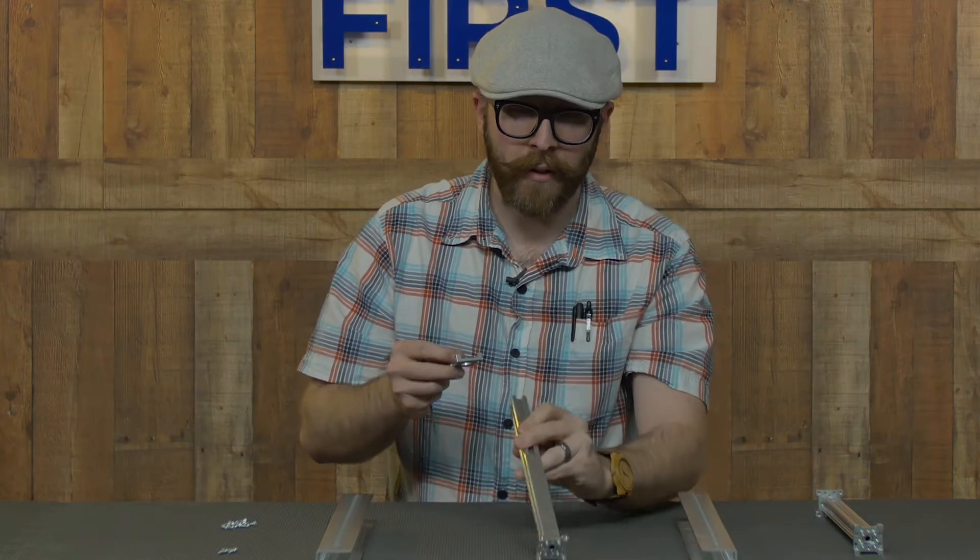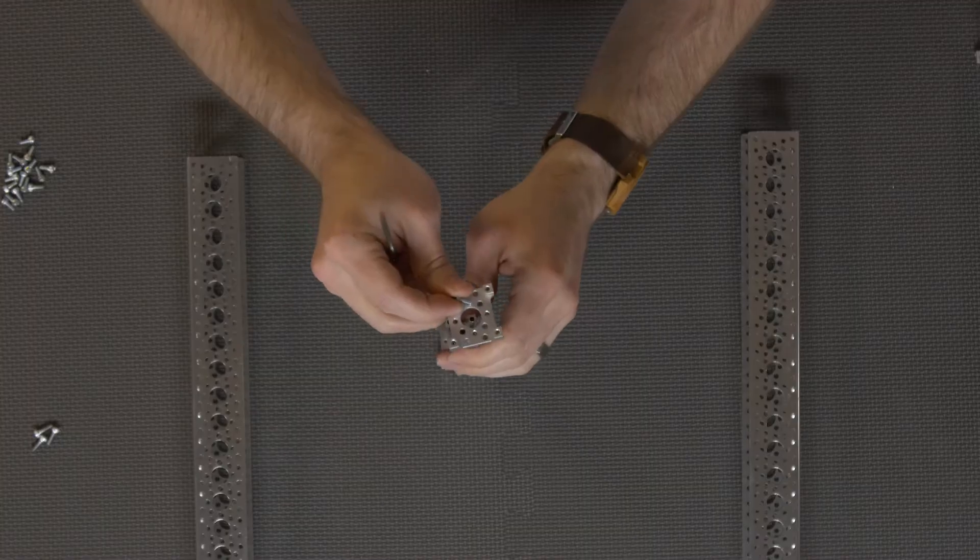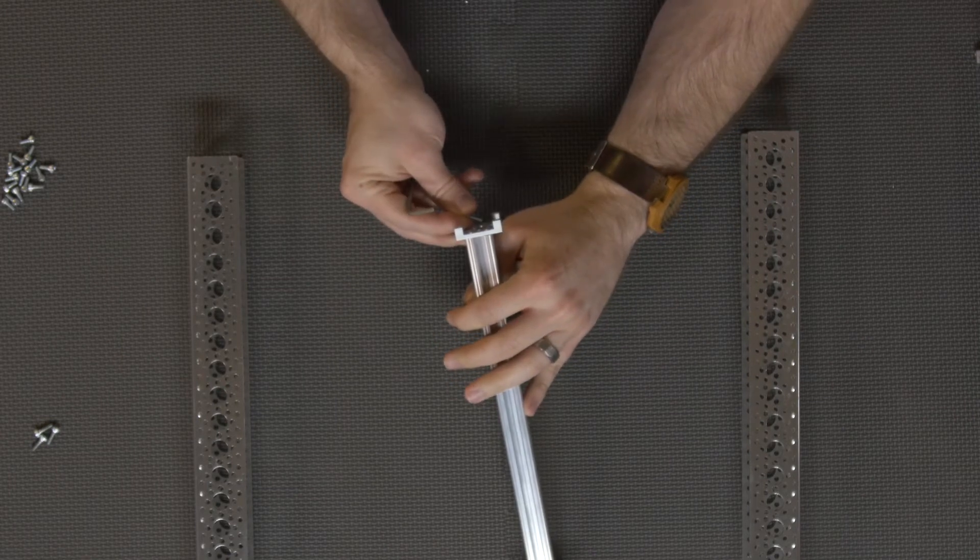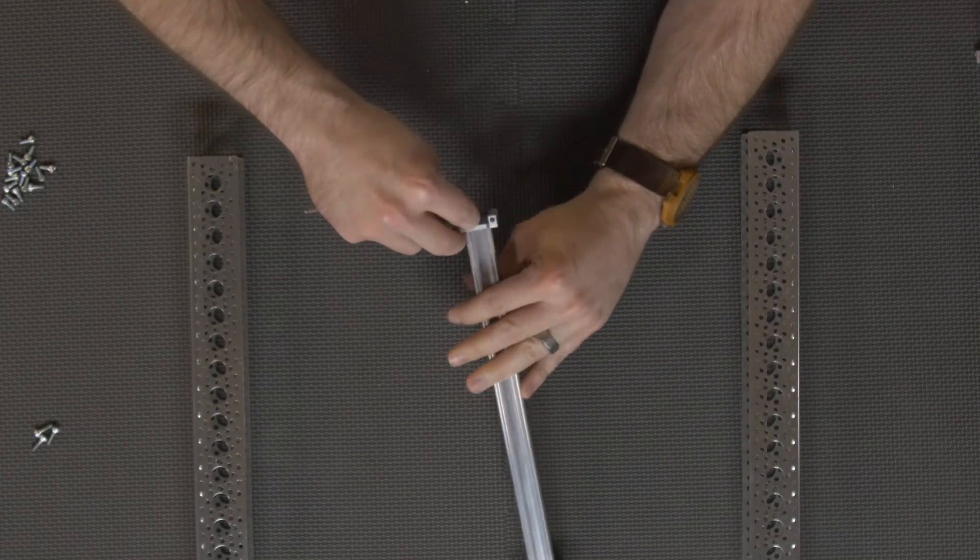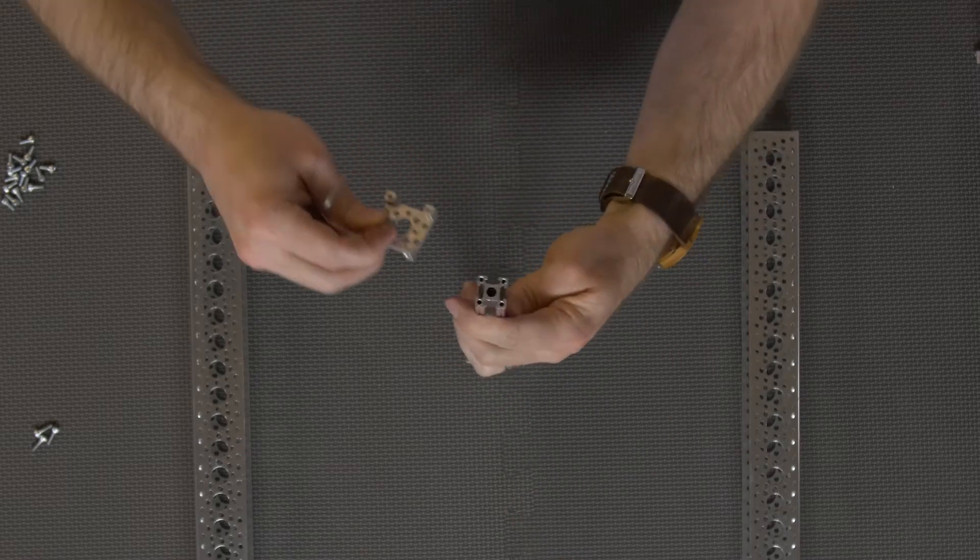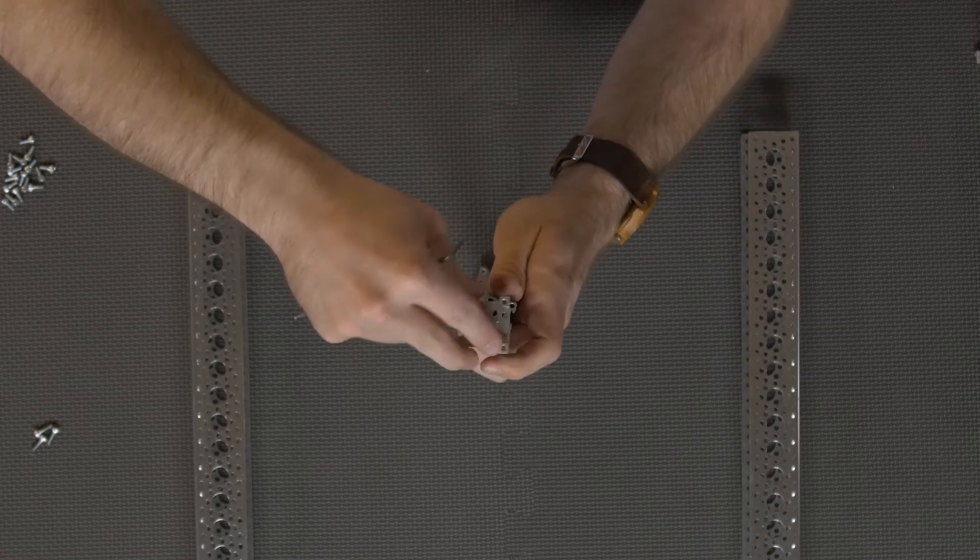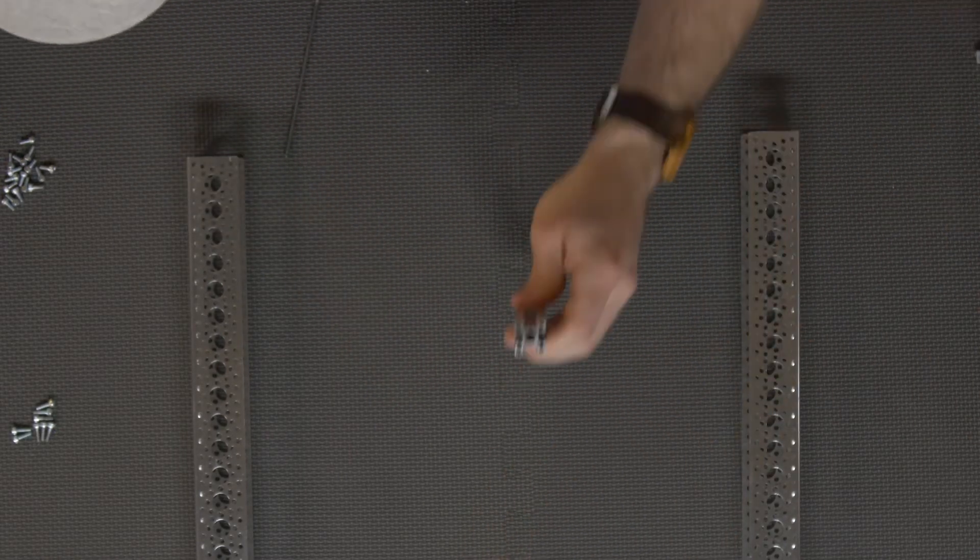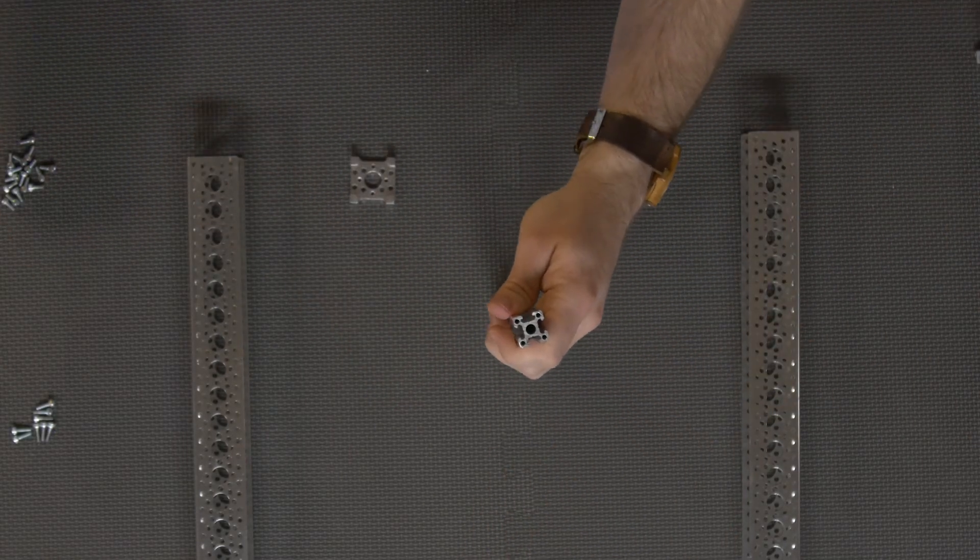Now you want to make sure as you're putting these together that your 545 360s, your side tap pattern mounts, are not 90 degrees from each other, but they're lined up so that the threading on the top of one is going to line up with the threading on the top of the other. All right, the first one's done. Let's continue with the next one.